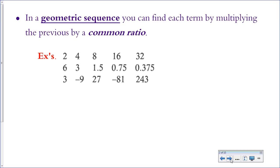Sometimes that constant is greater than 1, and sometimes it's less than 1, which can be a little confusing. Here are three examples of geometric sequences. In the first one it should be pretty obvious you're multiplying by 2 each time. In the next example it goes from whole numbers down to decimals less than 1, so you're probably multiplying by a fraction — in this case, 1 half each time. It's best to think about it as multiplication, not division. Think about it as multiplying by 1 half rather than dividing by 2 each time.